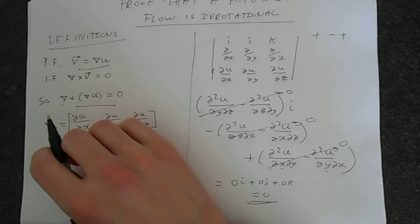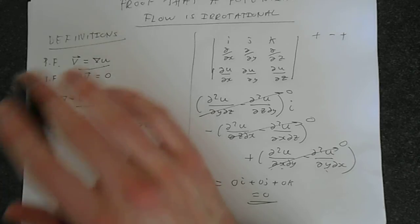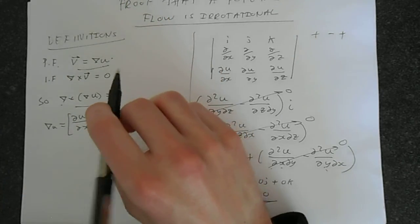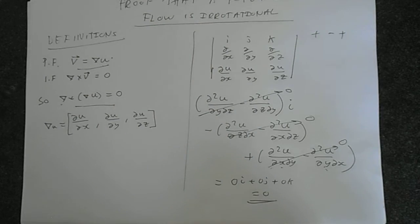So there you go. That's why a potential function must be irrotational. It flows straight from the definition. So hopefully this is helpful. And thank you for watching.